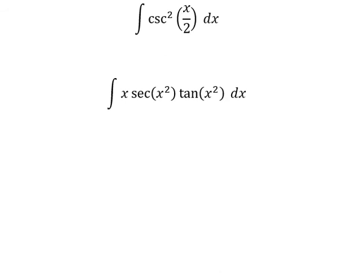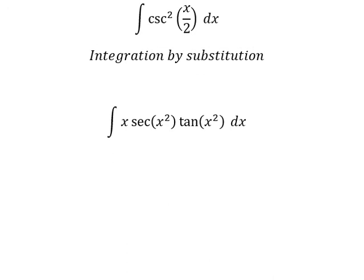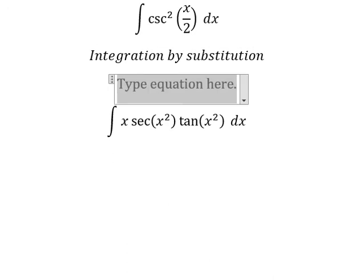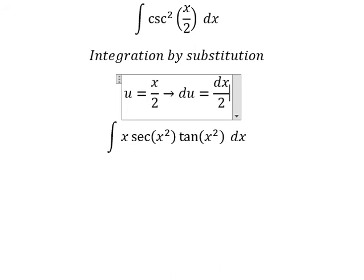We need to use integration by substitution. So I will put u equal to x over 2. So we do first derivative for both sides. We have du equals dx over 2. Because we don't have 1 over 2 in here, so we need to multiply both sides by number 2.